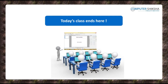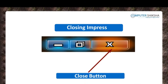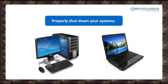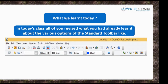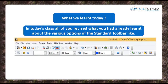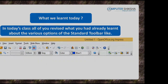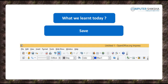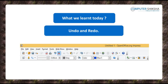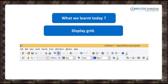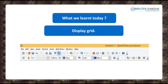Since we will end today's class here, close your file and properly shut down your computers. In today's class, all of you revised what you had already learned about the various options of the standard toolbar — like Save, Copy, Paste, Print File Directly, Undo, Redo, Table, Hyperlink, and Grid Display — and also practiced their use.